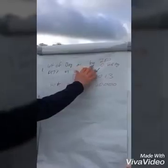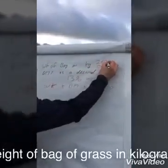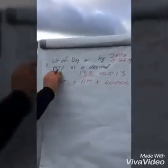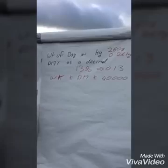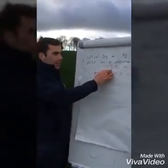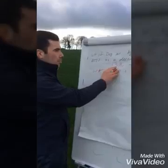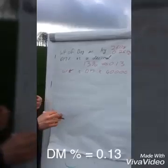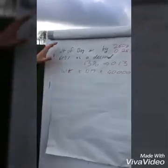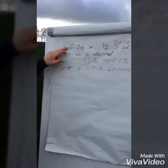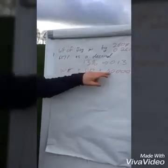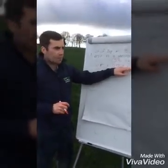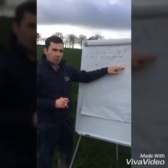We want the weight of the bag in kilos — this bag is 260 grams, so on a kilo basis that's 0.26 of a kilo. We also want the dry matter percent expressed as a decimal. The dry matter here at the moment, measured yesterday, is 13% — we've had quite a lot of rain over the last two days — so expressed as a decimal that's 0.13. We then multiply the weight in kilos by the dry matter decimal and by 40,000. The reason we multiply by 40,000 is that there are 40,000 quadrats in one hectare, so this puts the result on a per-hectare basis.